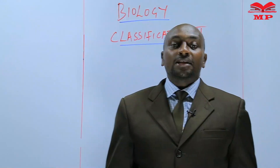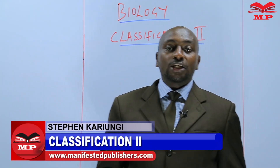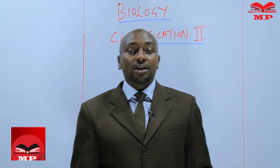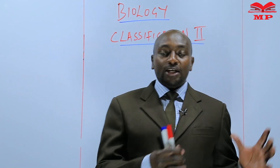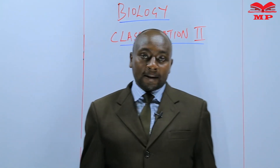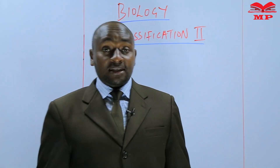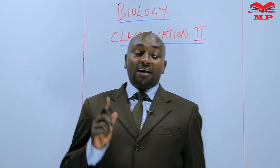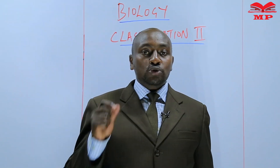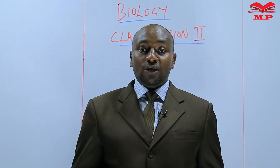Welcome to Manifested Publishers. My name is Stephen Karyungi. We are going to continue with what we are learning about kingdom fungi. Last lesson, we learned about the examples of kingdom fungi — examples such as rhizopus mold, mushrooms, and yeast. We also went on to look at the characteristics of kingdom fungi, and the first characteristic we saw was that a fungus is made of a basic functional unit called a hypha, whose plural is hyphae. So today, we shall continue with the characteristics of kingdom fungi.